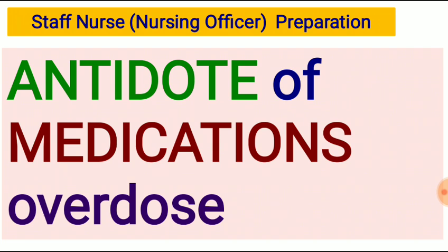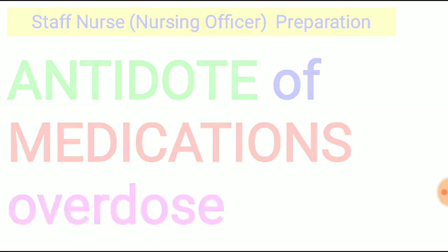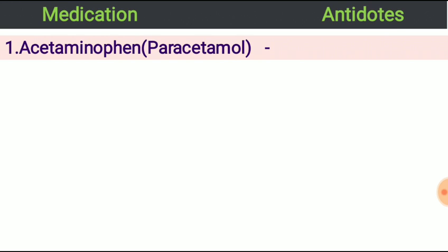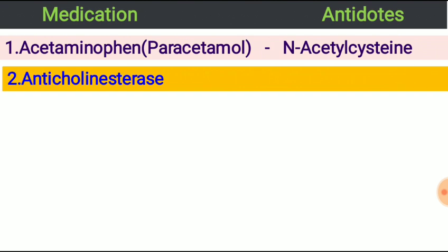Let's start. First, acetaminophen — also known as paracetamol — which is widely used as an analgesic, antipyretic, and anti-inflammatory drug. The antidote of acetaminophen or paracetamol is N-acetylcysteine. Next, anti-cholinesterase: anti-cholinesterase inhibits the acetylcholinesterase enzyme from breaking down acetylcholine, thereby increasing